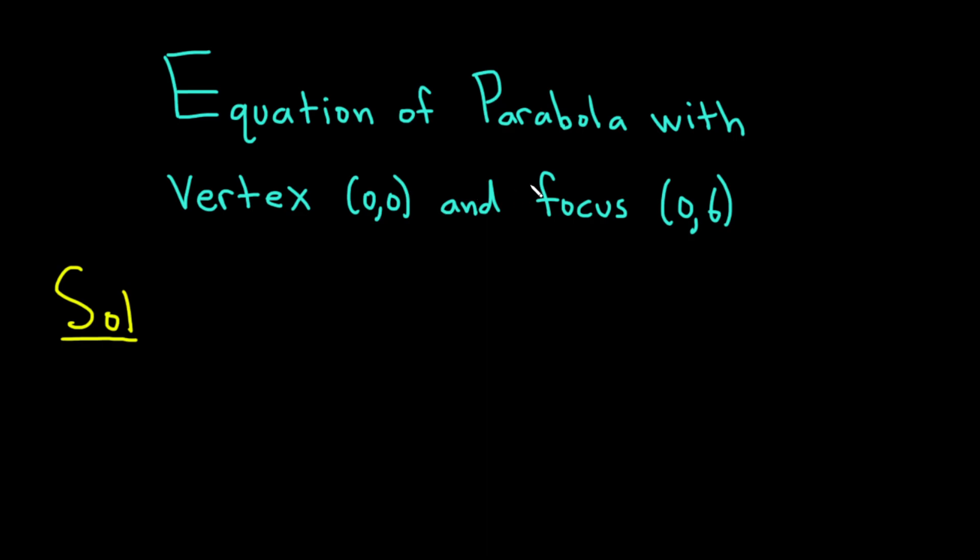So whenever you're looking for the equation of a parabola and you're given some information, a good idea is to start with a rough sketch of what you have. So here's the y-axis and here's the x-axis. And we're told that the vertex is (0,0). So let's go ahead and put that on our graph, right here at the origin.